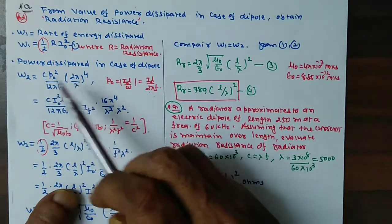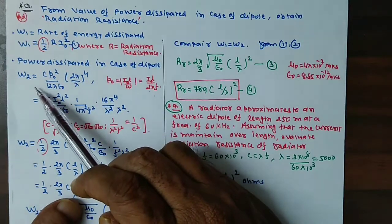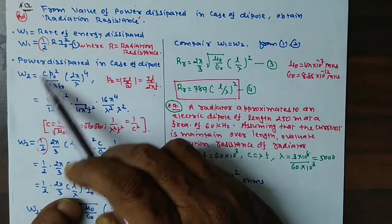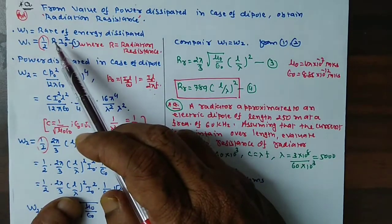What is our aim? Our aim is to produce the equation of W2 like W1. This one half and I0 square which is coefficient.